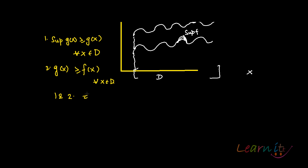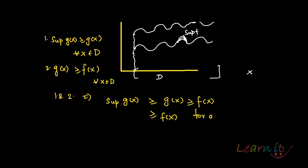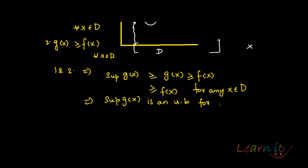Steps 1 and 2 together imply that supremum of g(x) is greater than or equal to g(x), which is greater than or equal to f(x). So we can say that supremum of g(x) is greater than or equal to f(x) for any x belonging to the domain. This means that sup g(x) is an upper bound for f(x) as well.